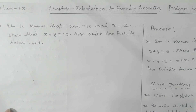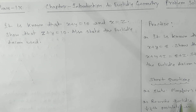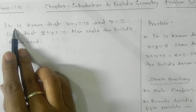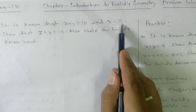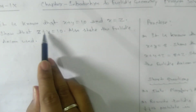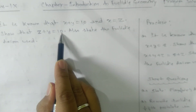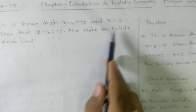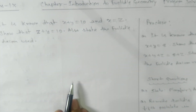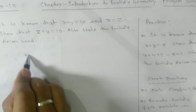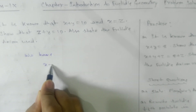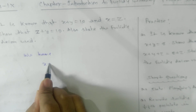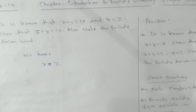Here we have the third problem. It is known that x plus y equals 10, and x equals z. We need to show that z plus y equals 10, and also state the Euclid axiom used. So what we have is: x equals z — this has been given.